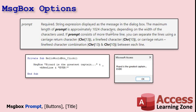Continuing on with the prompt — if it consists of more than one line, you can separate it using CHR(10), CHR(13), or I like to use VBNewLine. You just do it like: "Picard is the greatest captain..." & VBNewLine & "He is" — and then your box shows multiple lines. So you can actually put line breaks in your message box and it looks nice. You can also put extra blank lines in there if you want.